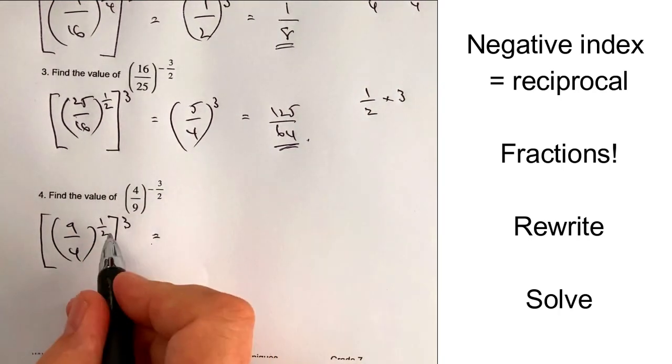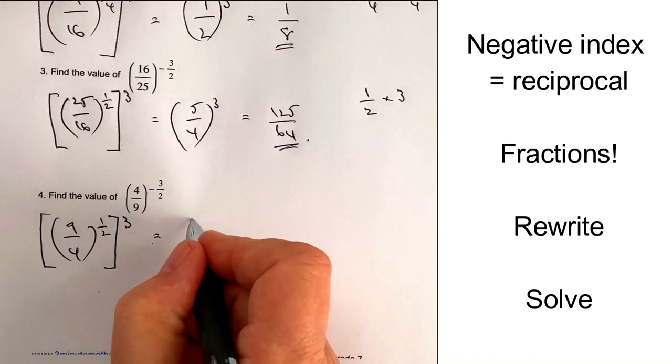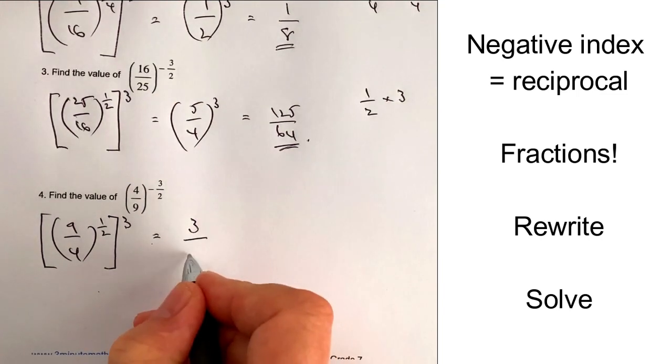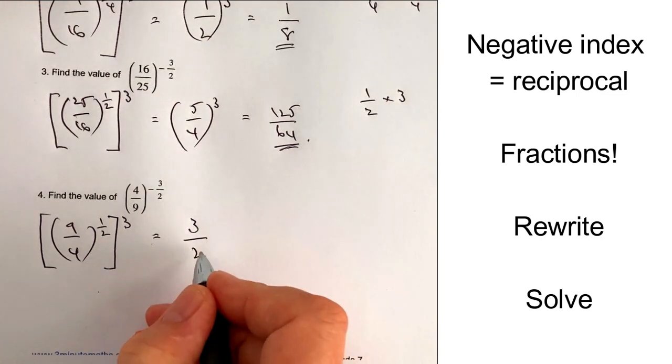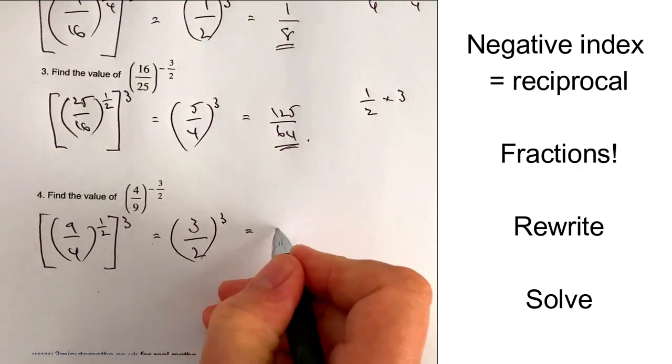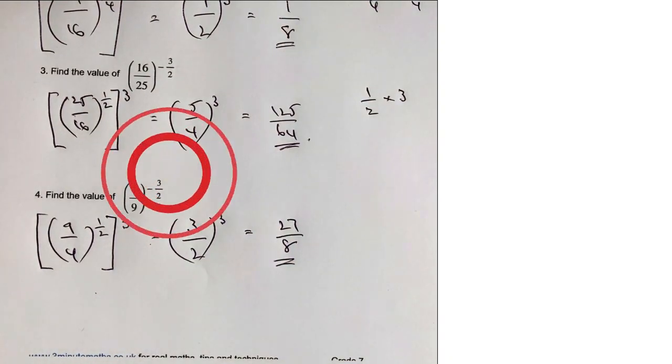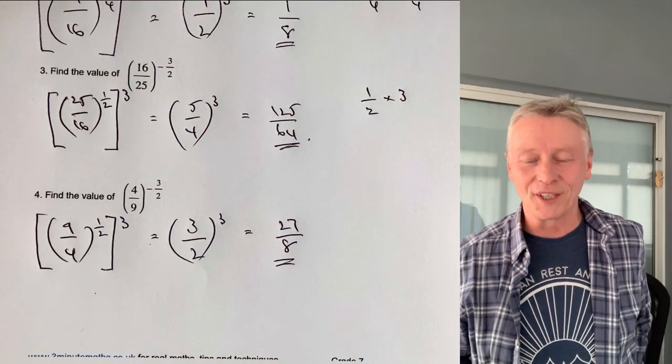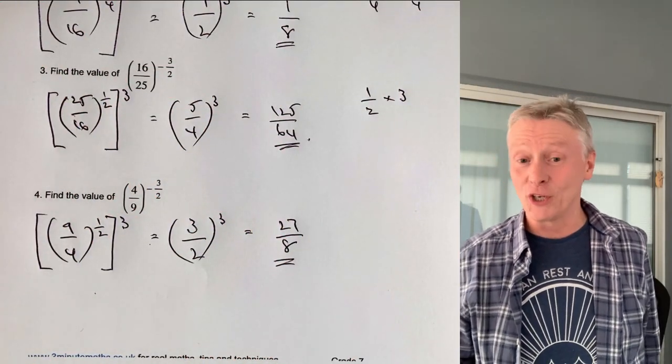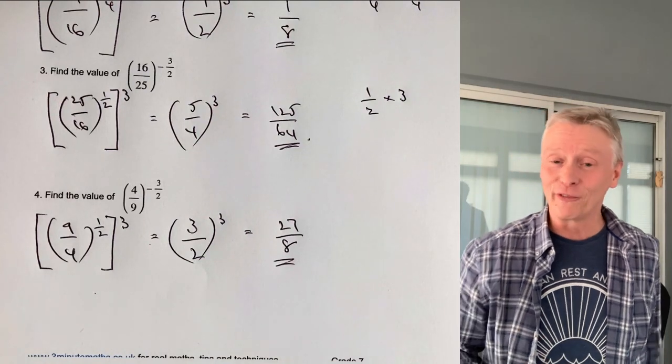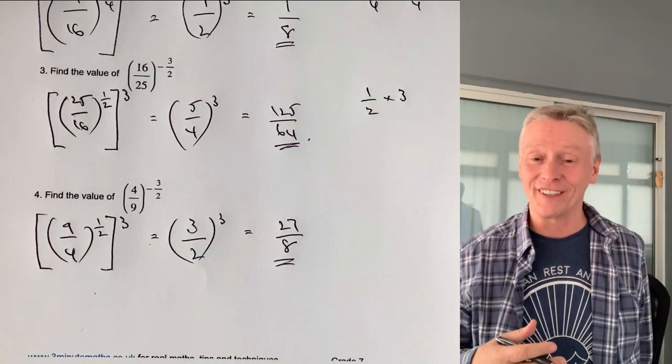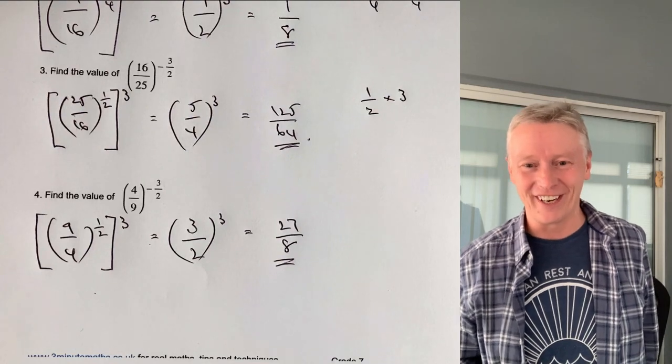So that's going to give me 9 to the power of a half is going to be the square root of 9 is 3, square root of 4 is going to be 2, and then I've got to cube those. So I'm going to get 27 over 8, and that would be the answer to that particular question. I hope it's been useful to you. If you're not sure, always add a comment below. Look forward to seeing you in the next video.